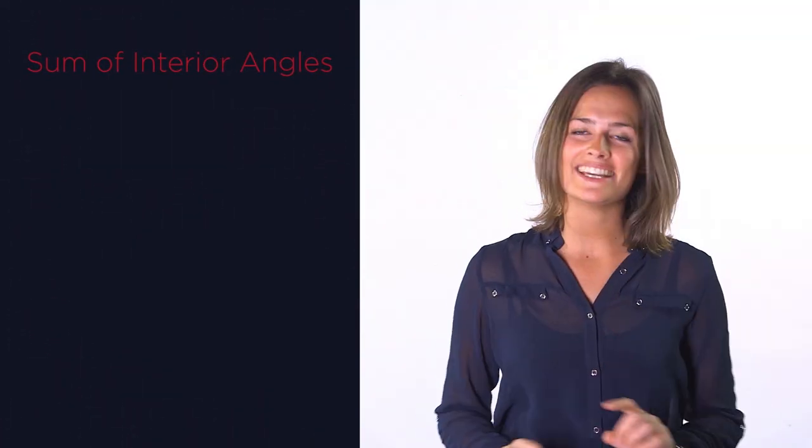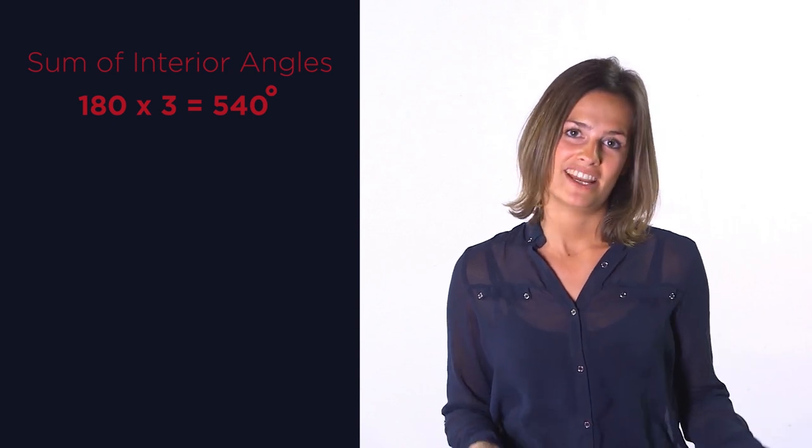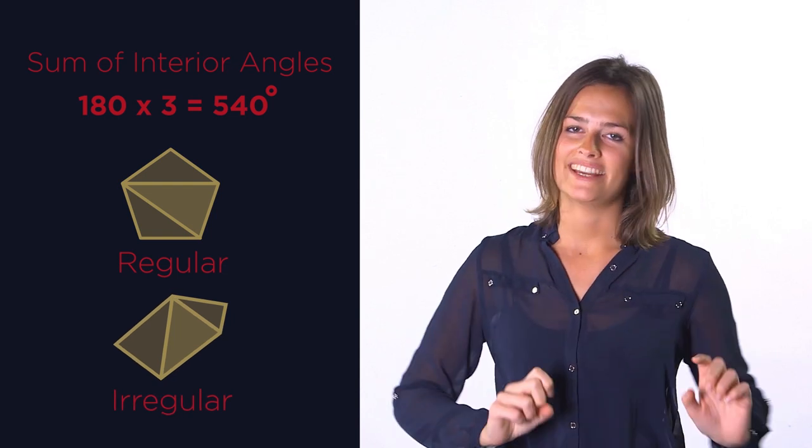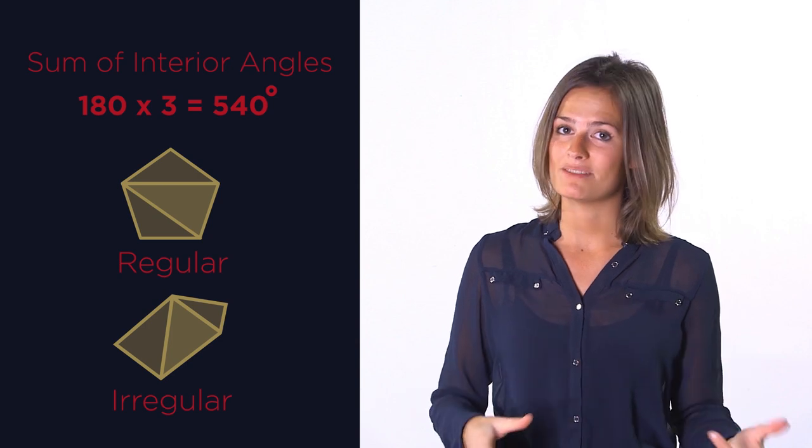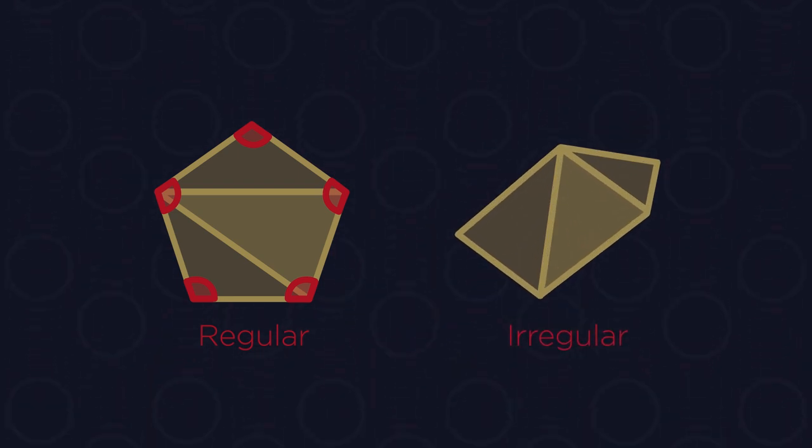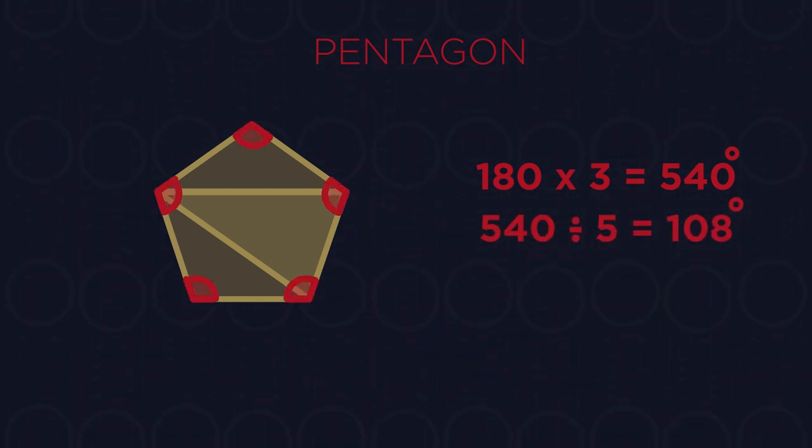We've just seen that we can easily work out the sum of interior angles for any type of polygon. It can be regular or irregular. But to work out the size of one interior angle, it has to be a regular polygon. Regular polygons have all equal sides and angles, whereas irregular are different. The sum of interior angles for a pentagon is 540. So 540 divided by 5 angles is 108 degrees each.